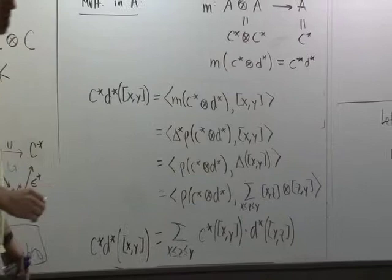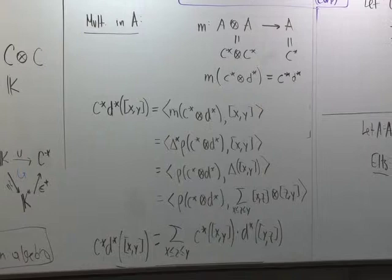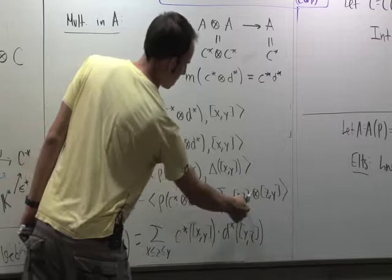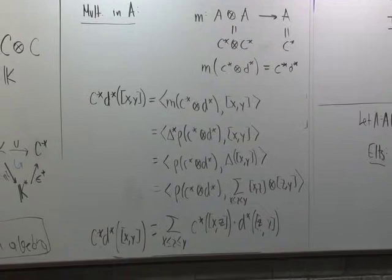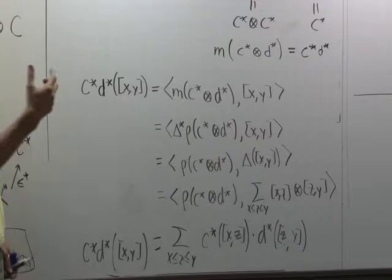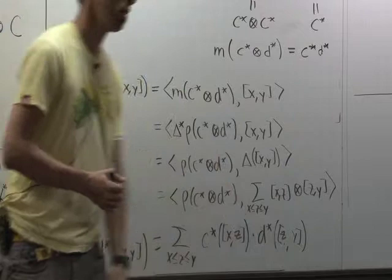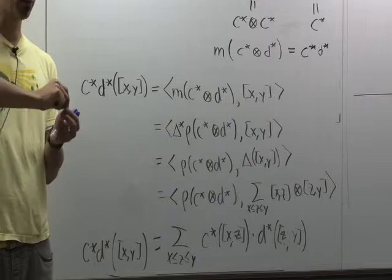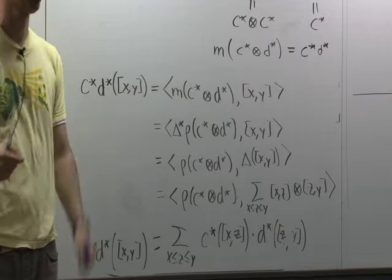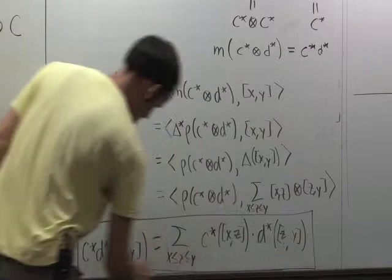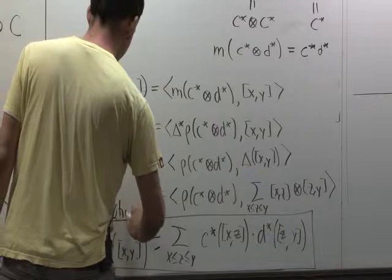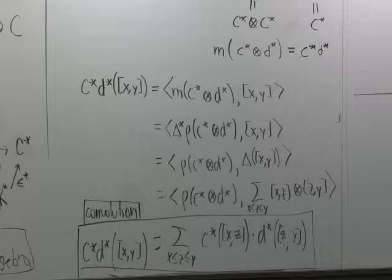Do you know this multiplication? It's called convolution. That's what the multiplication in the incidence algebra looks like — it's convolution. You take your interval [x,y], look at all ways of splitting it into two pieces at an intermediate z, apply c* to the bottom piece and d* to the top piece, and sum. How many of you have seen Möbius functions? Maybe this reminds you a little bit of Möbius functions — it will more when you see the homework.